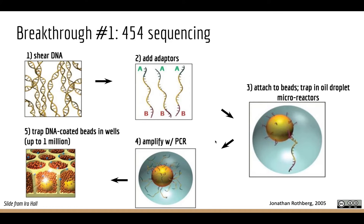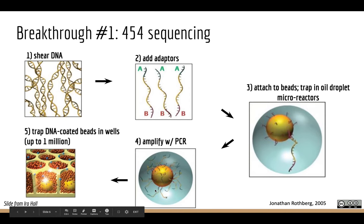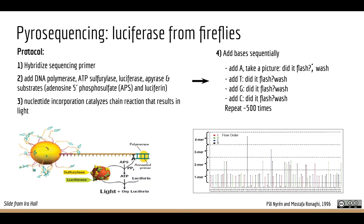The breakthrough that occurred in my second year of grad school was 454 sequencing. The idea: you shear DNA and add adapters that tether DNA fragments to beads that are placed into individual wells. Each well contains one bead with many clonal copies of one original DNA template, generated through amplification on the bead. Those clonal copies could then be used to figure out what the sequence was.